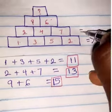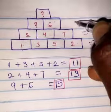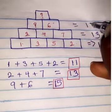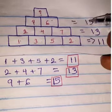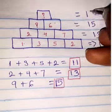Now we have 11, 13, 15. It means this will be 17.